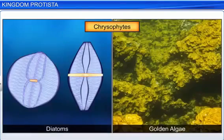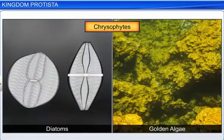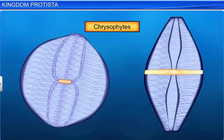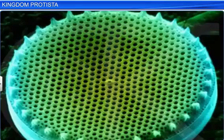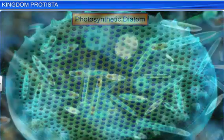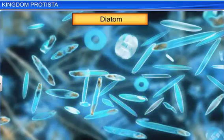Chrysophites include Diatoms and Golden Algae or Desmids. They are microscopic and float in great numbers in both fresh water and saline water. Also, they are mostly photosynthetic. Diatoms are known as chief producers in the oceans.